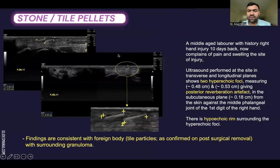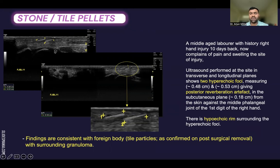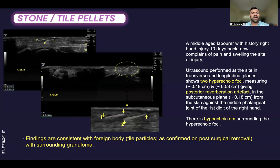This is a case of a middle-aged laborer with a history of right hand injury 10 days back, presenting with pain and swelling at the site of injury. Ultrasound shows two hyperechoic foci measuring approximately half a centimeter, giving posterior reverberation artifact in the subcutaneous plane, lying approximately 0.18 cm from the skin against the middle phalangeal joint of the first digit of the right hand. There is a thin hyperechoic rim surrounding the hyperechoic foci, with findings consistent with tile particle foreign bodies, as confirmed on post-surgical removal with surrounding granuloma.